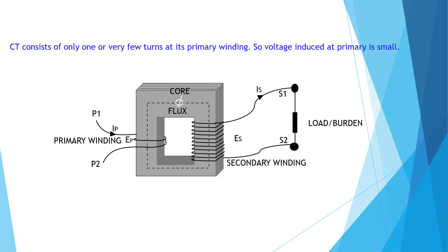Current transformer steps down current from higher value to a lower value for the purpose of measuring current and relaying protection and control of the line in which the CT is connected in series.